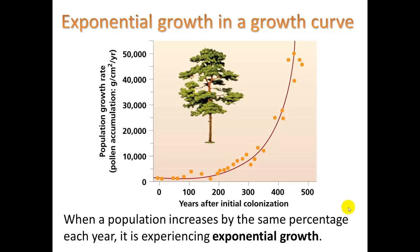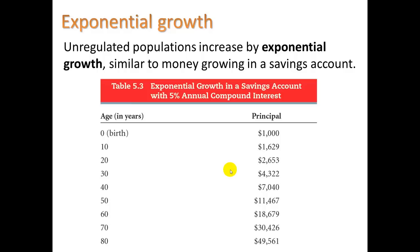Now let's take a look at exponential growth. Here we see a Scottish pine tree and some data on years after initial colonization. This was happening in Europe where a glacier retreated, leaving an area with no trees. Over several hundred years they monitored the Scottish pine population and found it was growing at an exponential rate. This means when a population increases by the same percentage each year it is experiencing exponential growth. This is similar to money growing in a savings account — if you put $1,000 into a bank account at birth earning 5% annual compound interest, by the time you're 80 it would be worth about $49,000, roughly 50 times more than you first put in.